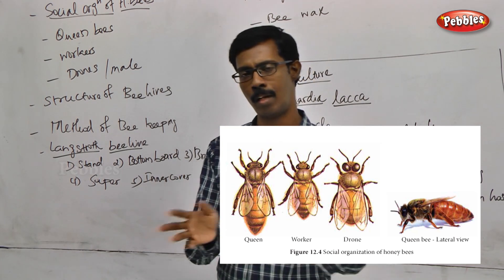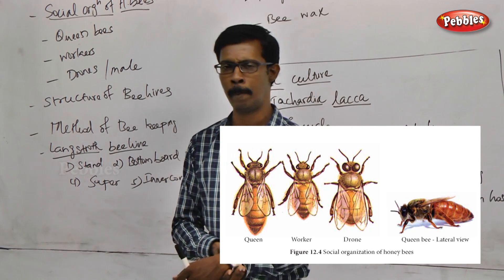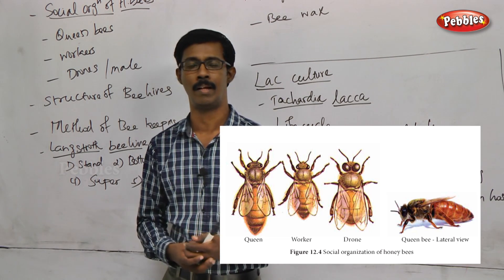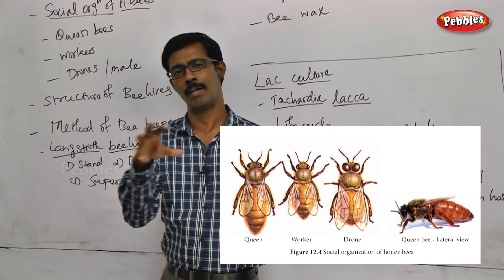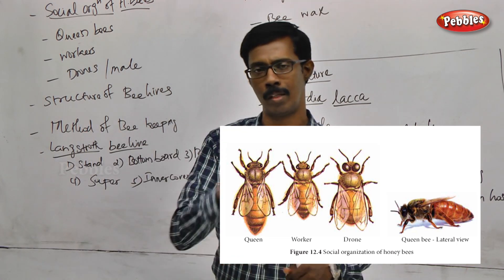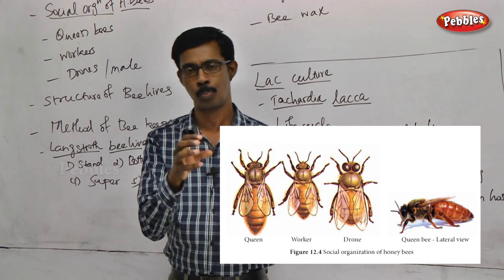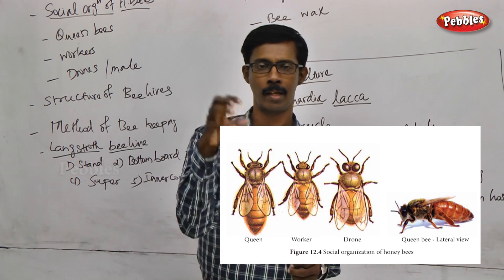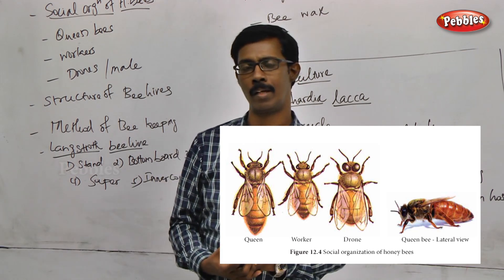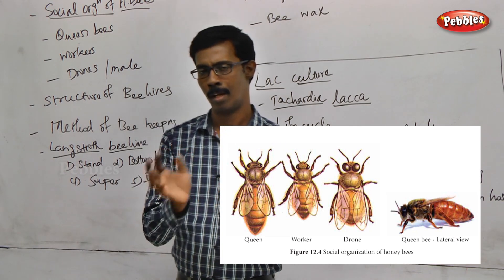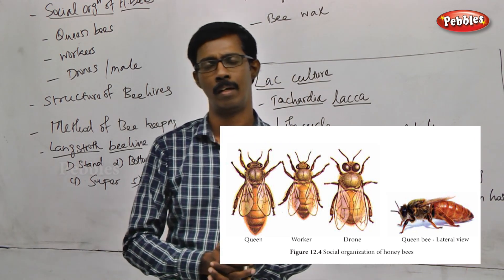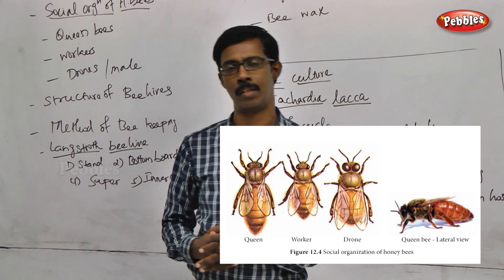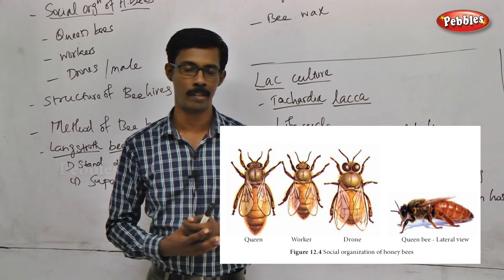In the later stage, in the second half of their lifetime, worker bees collect honey. When they collect honey, they collect nectar using their modified mouthparts. When they collect nectar, enzyme action occurs in the body of the worker insect.